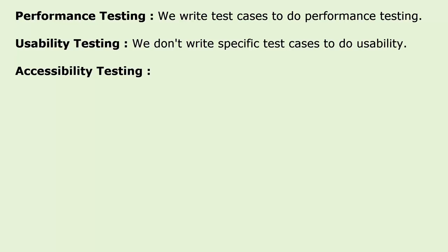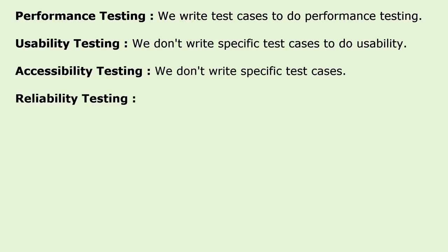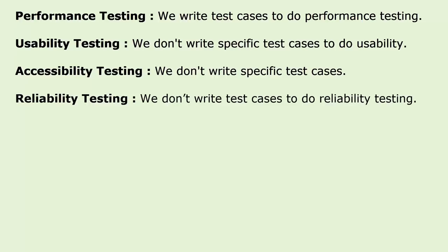Reliability testing involves performing testing on the application continuously for a long period of time in order to verify the stability of the application. We don't write manual test cases to do reliability testing — we use automation tools to do this by picking up some scenarios.